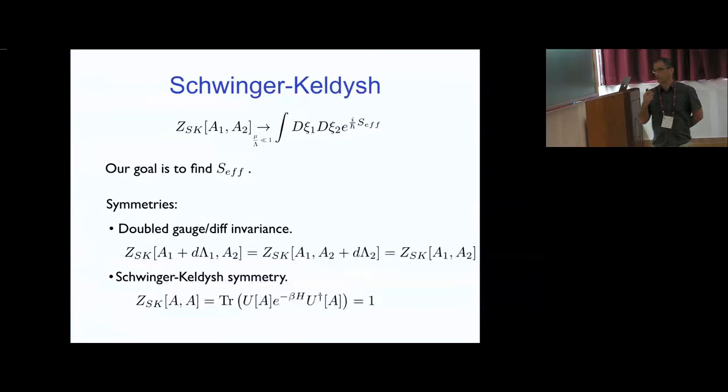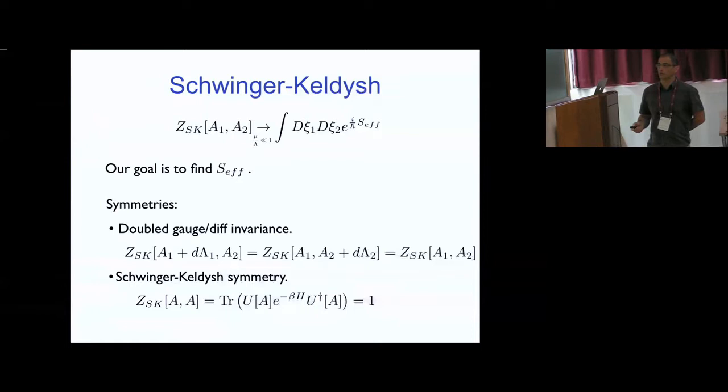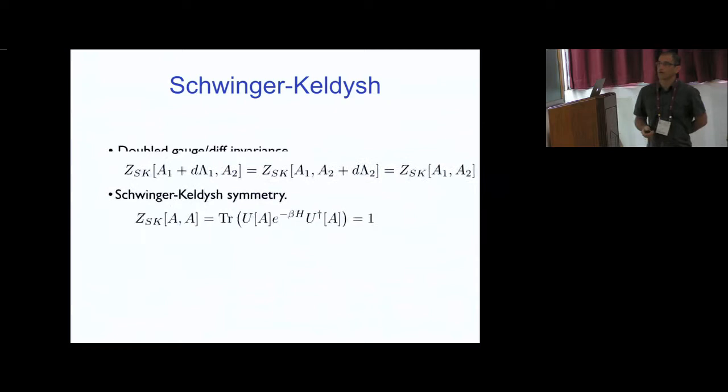The other symmetry I need is called Schwinger-Keldish symmetry — the MIT group called this the normalization condition. It states that if I set the sources to be equal, then because of unitarity and cyclicity of the trace, the Schwinger-Keldish partition function is equal to one.